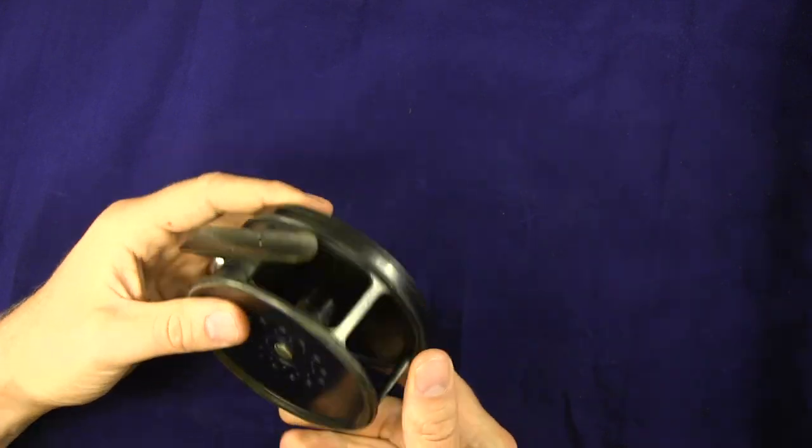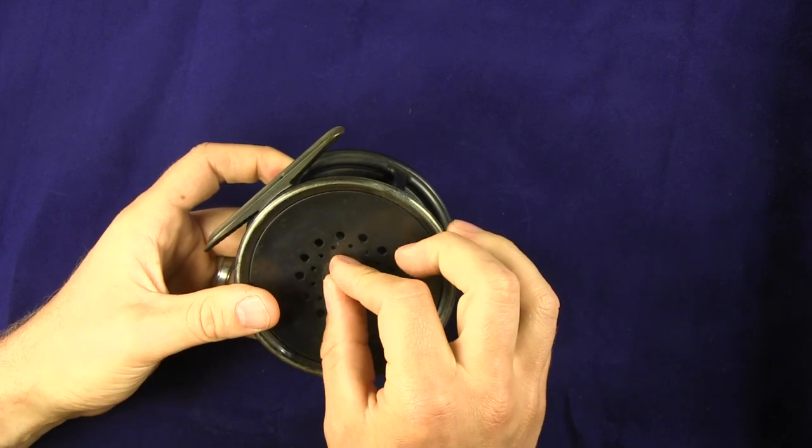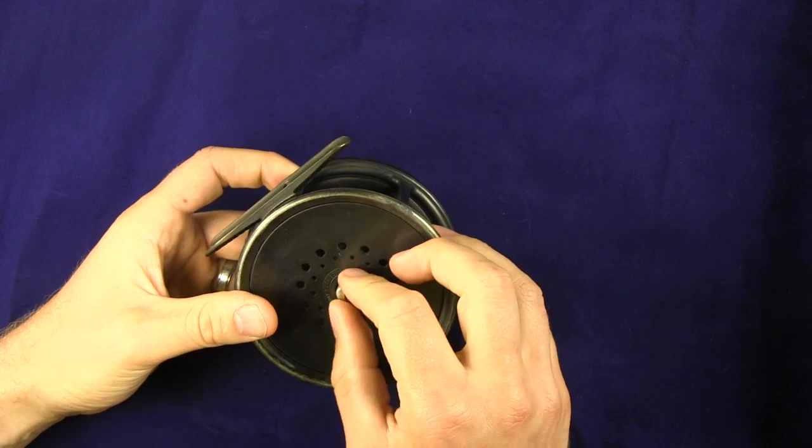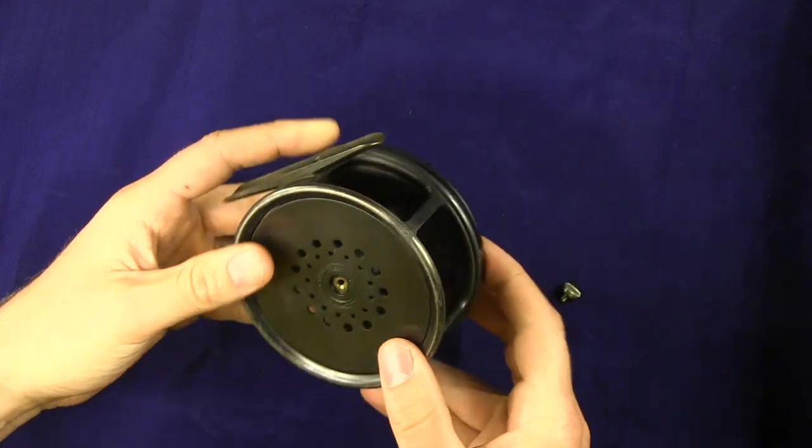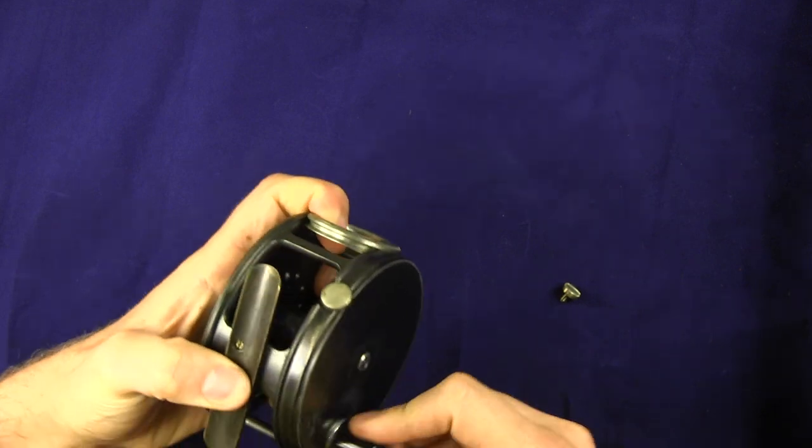So to open this reel up, it's got the alternate counterclockwise rotating screw set. So you pull that off. And then you go and you take the spool and the face plate, wind it the opposite way.